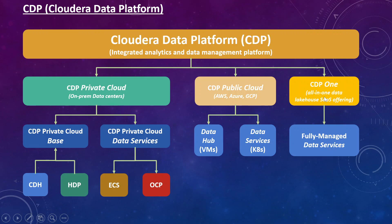CDP private cloud has two products: CDP private cloud base and CDP private cloud data services. CDP private cloud base is a merger of CDH and HDP services — the best of both is included. The base version runs completely on data centers or VMs. For data services, you run some services on Kubernetes or container-based infrastructure, either ECS (Embedded Container Service, built by Cloudera using open-source Kubernetes) or OCP (Red Hat OpenShift Container Platform, licensed from Red Hat).